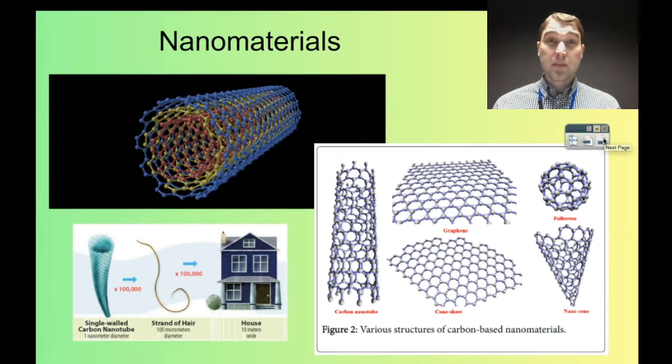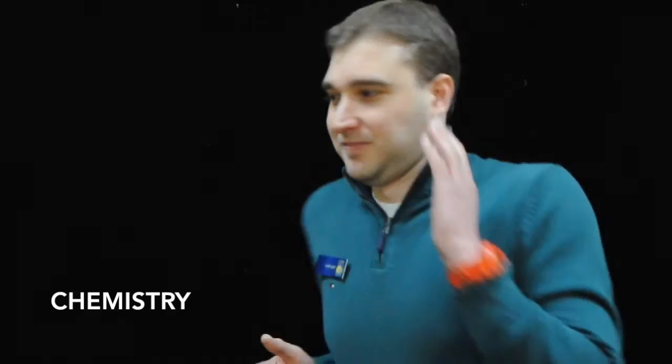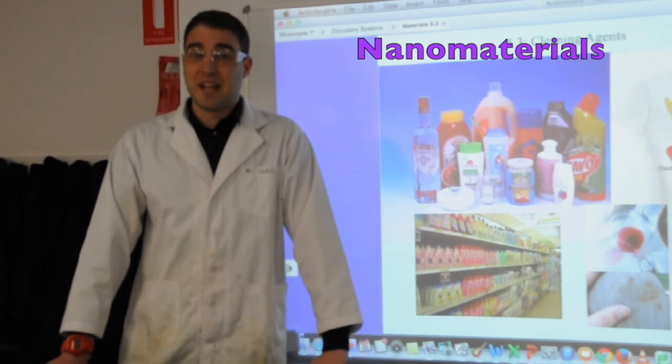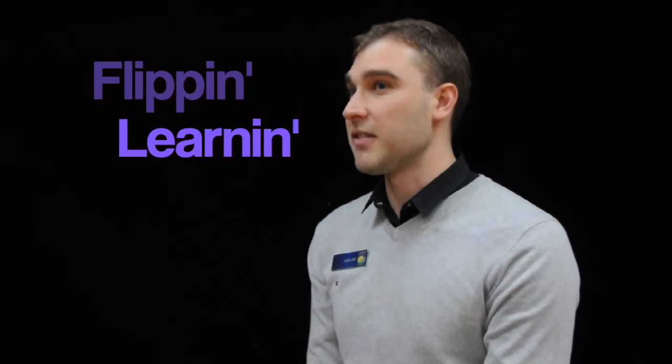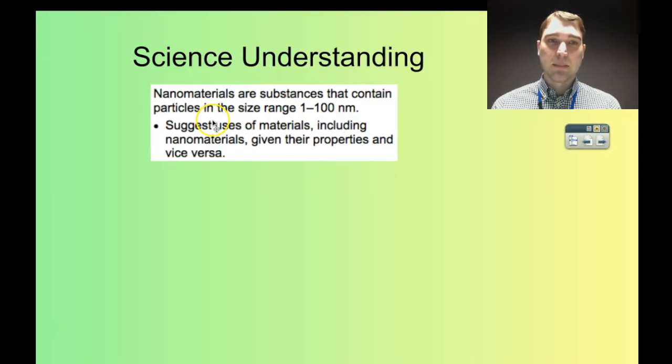How do you determine Flipping Science? We're looking at nanomaterials. So here's the science understanding that we're looking at: nanomaterials are substances that contain particles in the size range of 1 to 100 nanometers. Then suggest use of materials including nanomaterials given their properties.